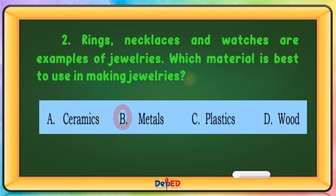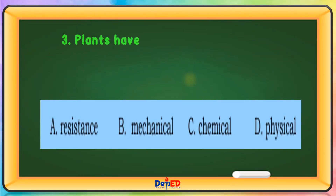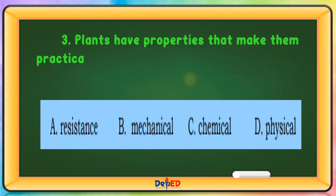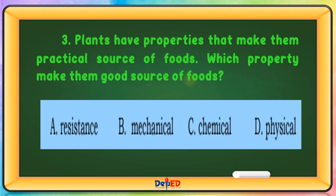Plants have properties that make them a practical source of foods. Which property makes them a good source of foods? The correct answer is Letter C: Chemical properties.